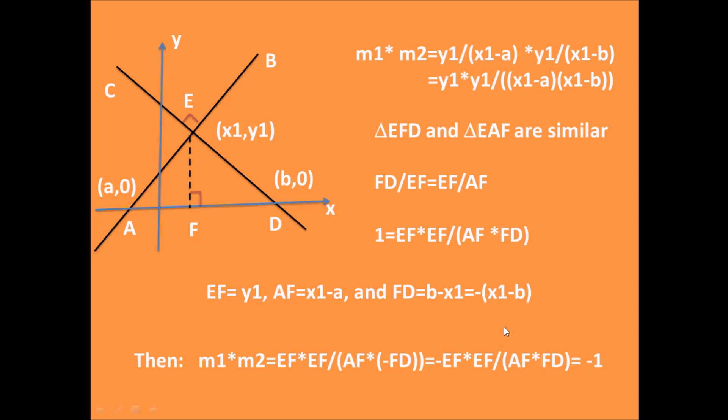However, we already know that EF*EF/(AF*FD) = 1. So we have proven that if two lines are perpendicular to each other, then the product of their slopes m1*m2 = -1.